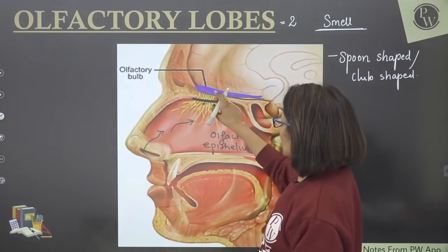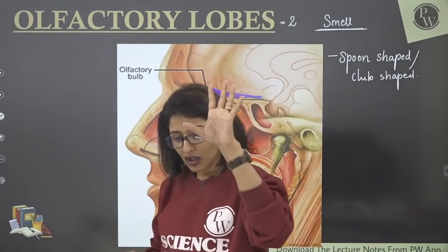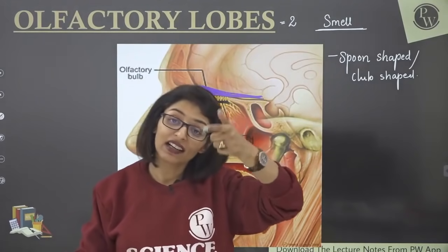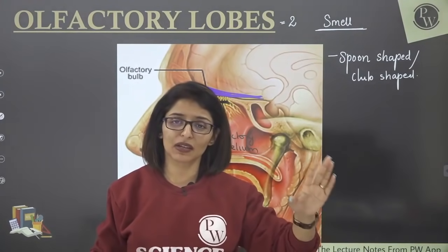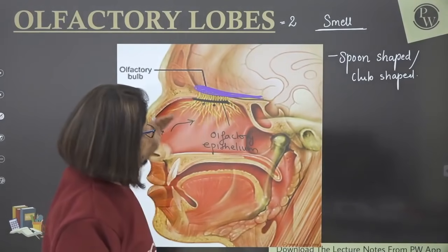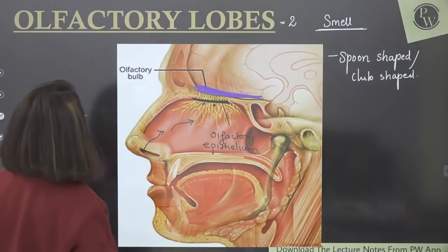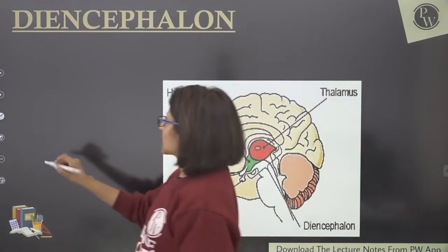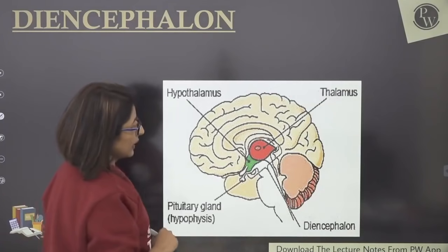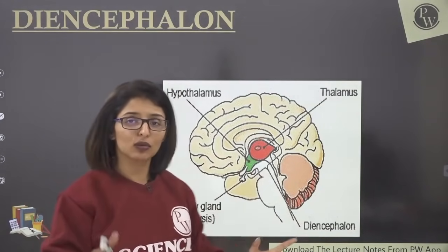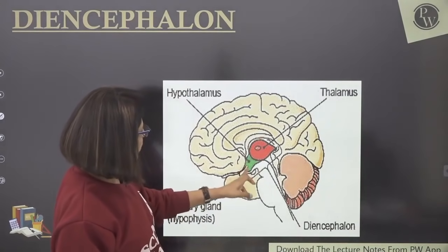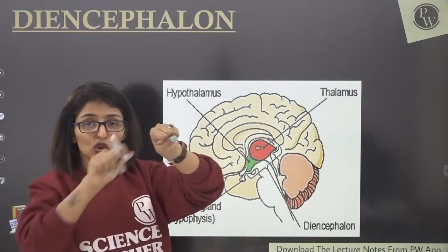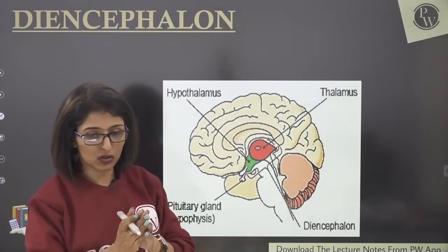From the olfactory lobe, nerves carry signals to the brain, and for memory — remembering a smell — signals go to the temporal lobe, which gets maximum credit for memory. The third part of forebrain is diencephalon. It consists of two oval bodies enclosed by the cerebral hemispheres, so it is not visible from outside — you only see it when you cut the brain.